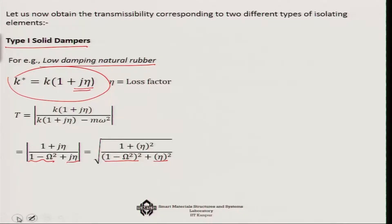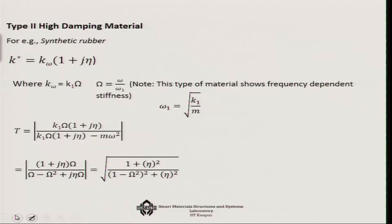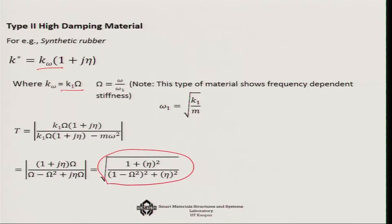For high-damping material (Type 2 damper), the real part of stiffness K_real is not constant but frequency-dependent: K(ω) = K₁ · ω̄. This changes the final relationship, which becomes very neat: the transmissibility is 1 / √((1 − ω̄²)² + η²) — so for high-damping material, it is the frequency ratio ω̄ and the loss factor η that directly control the transmissibility.